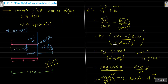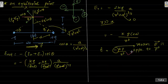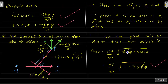So the important formulas to remember: for the axial point, E = 2kP/r³ in the direction of dipole moment. For the equatorial point, E = -kP/r³, meaning it is opposite to the dipole moment direction. Keep both of these in mind. There is also a shortcut method which gives E_equatorial = -kP/r³, opposite to the dipole moment.